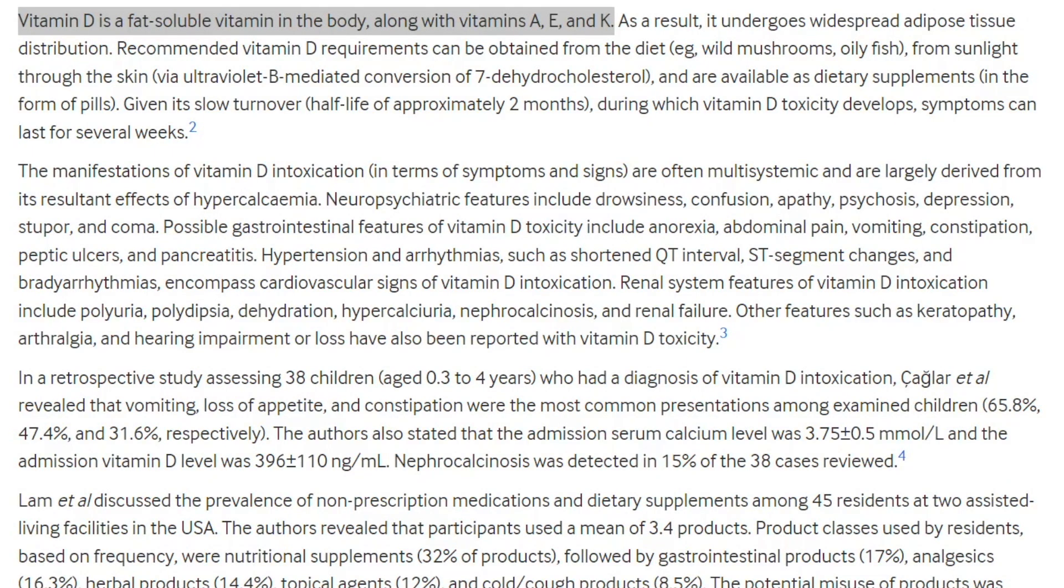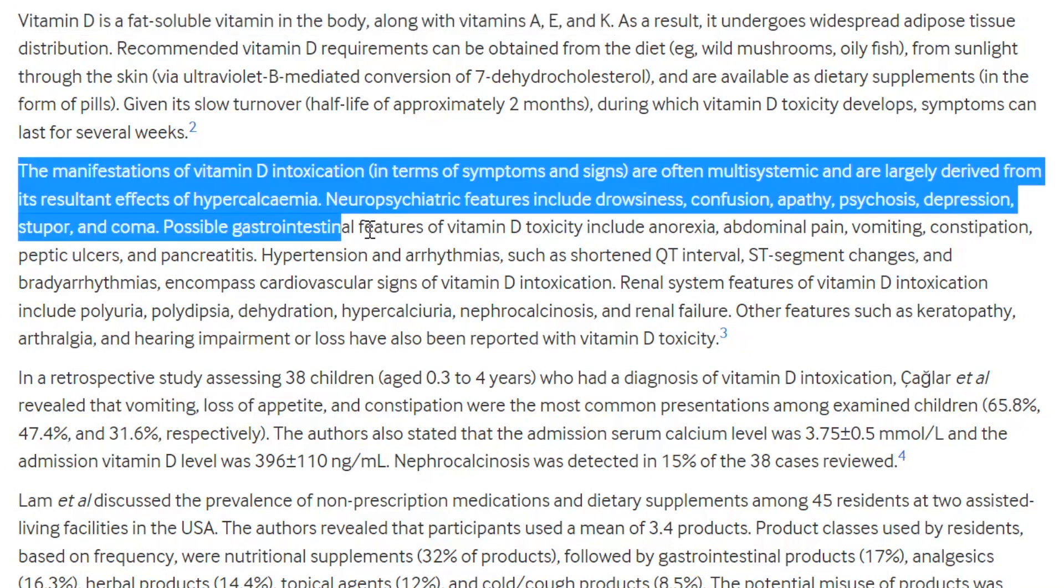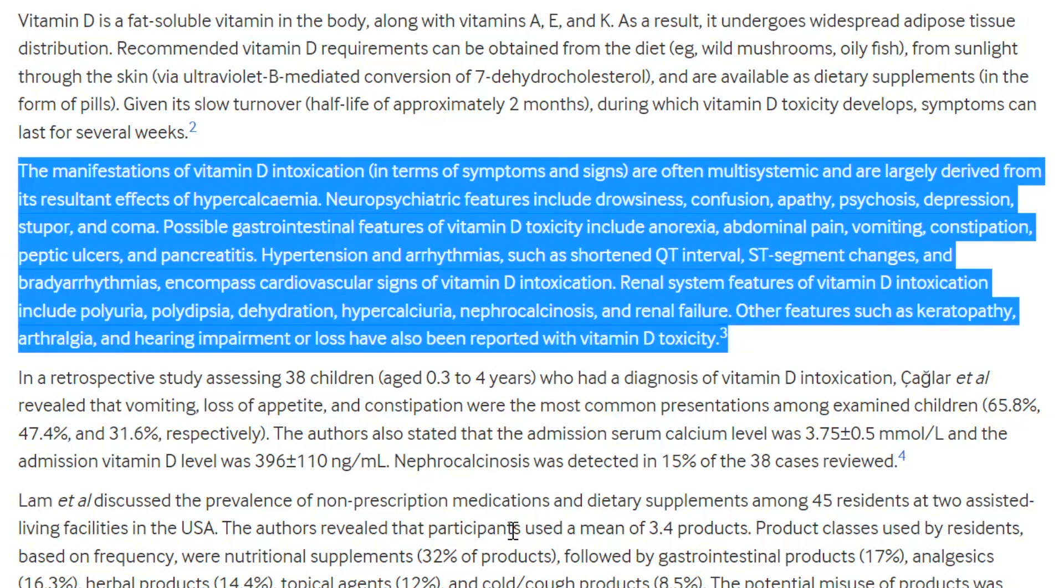The authors point out that vitamin D is a fat-soluble vitamin in the body along with vitamins A, E, and K. These are vitamins we have to keep track of and make sure we're not overdosing. That's why I recommend if you're going to supplement with vitamin D, you should, after a period of time, get a level checked. What are the symptoms of too much vitamin D? The manifestations of vitamin D intoxication are often multisystemic and largely derived from its effects on hypercalcemia. Neuropsychiatric features include drowsiness, confusion, apathy, psychosis, depression, stupor, and finally coma.